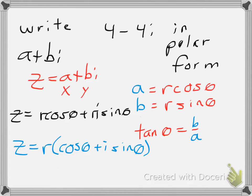So I have my value for r. So my answer is going to be 4 square root of 2 times cosine of 7 pi over 4 plus i sine of 7 pi over 4.